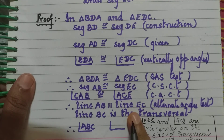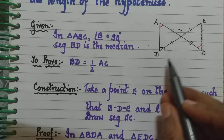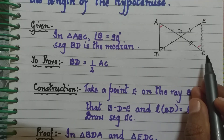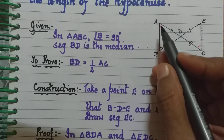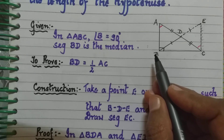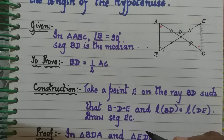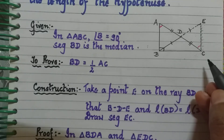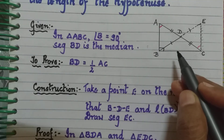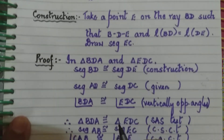Since line AB is parallel to line EC and line BC is the transversal, angles ABC and ECB are interior angles on the same side of the transversal. Therefore, angle ABC plus angle ECB equals 180 degrees — they are supplementary.